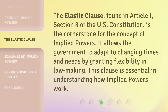The Elastic Clause, found in Article 1, Section 8 of the U.S. Constitution, is the cornerstone for the concept of implied powers. It allows the government to adapt to changing times and needs by granting flexibility in lawmaking. This clause is essential in understanding how implied powers work.